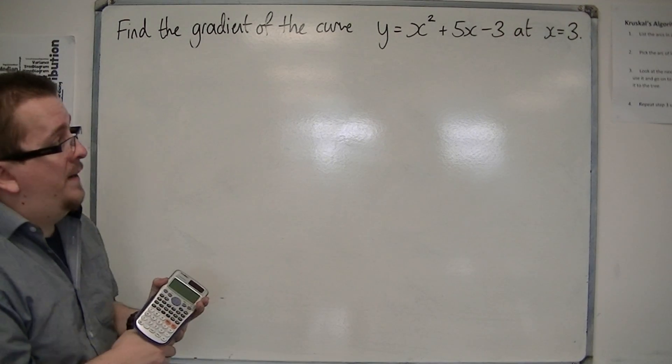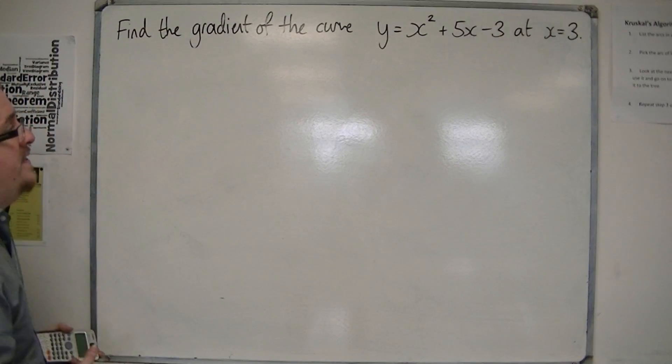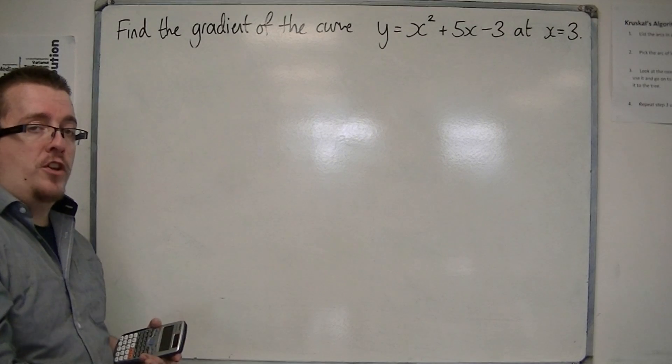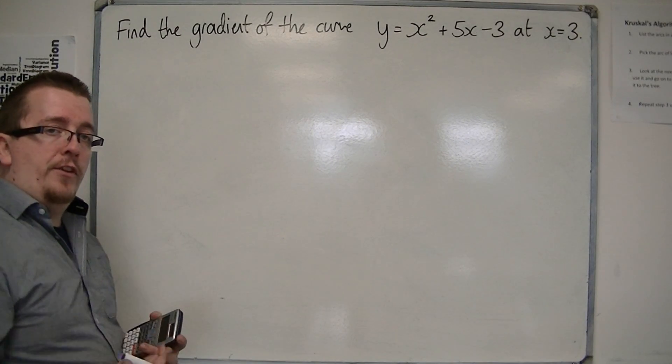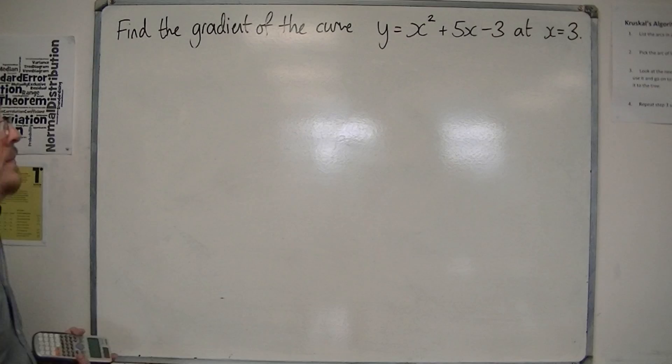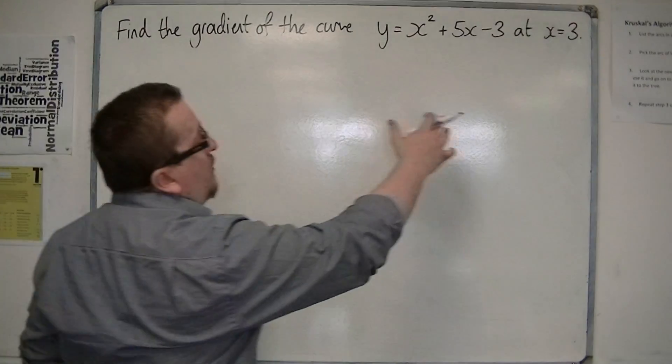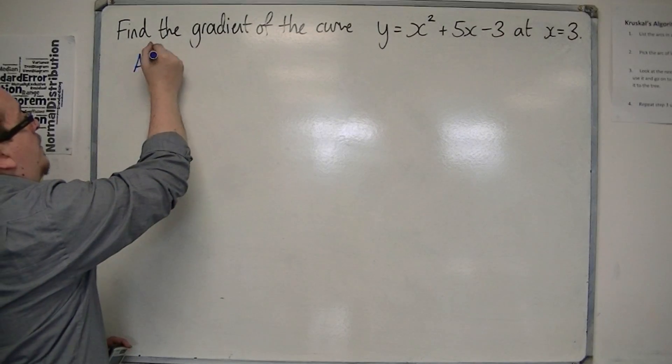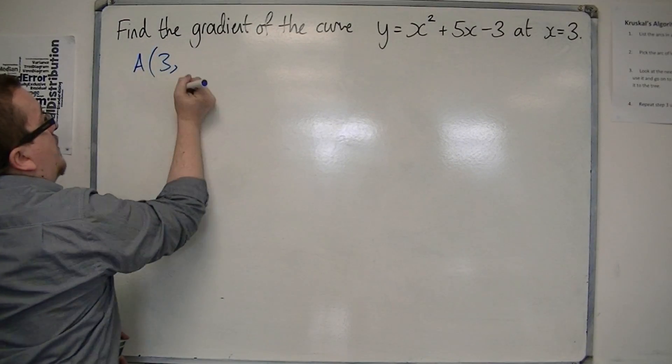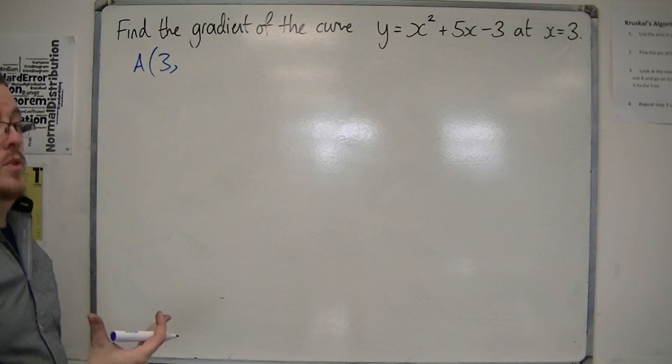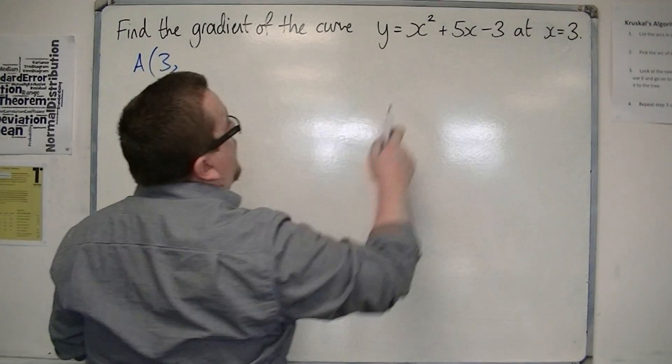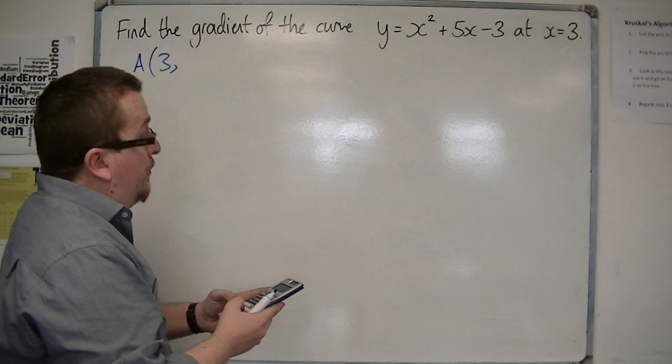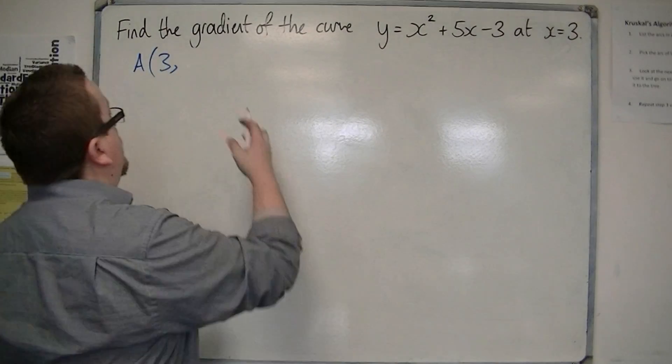The first part is going to be identifying the two points of the chord. So remember in the first video where I introduced this, we had two points. The first point will have x-coordinate 3, and so let's say that we've got the point A has x-coordinate 3, and its y-coordinate will be substituting x into this. So we get 3 squared plus 5 times 3, take away 3. So we get 21.